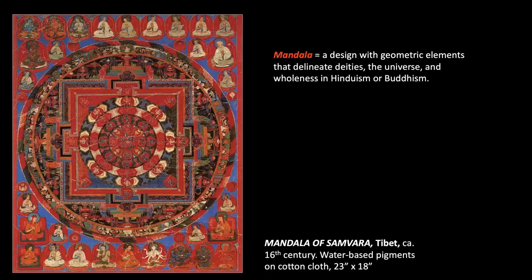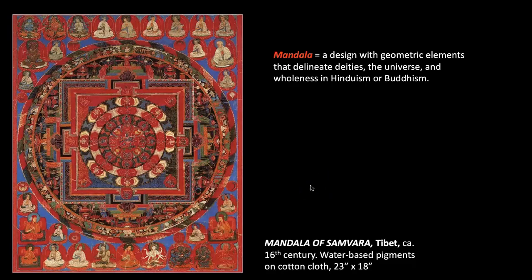The principal deity can be found in the innermost circle — that is Samvara, whose name appears in the title, who rules the universe and is accompanied by his female consort. There are eight paths that radiate from the center, with cosmic references such as rays of light, the cardinal directions, and elements such as water, fire, wind, and earth. Other deities can be found within other circles, as well as representations of the outer circle of the charnel fields, where cremation fires burn the bodies of the dead with menacing animals.